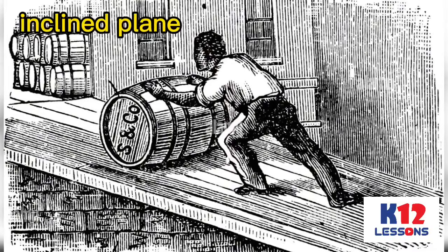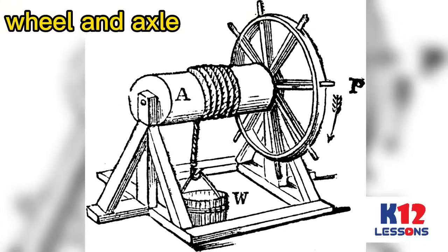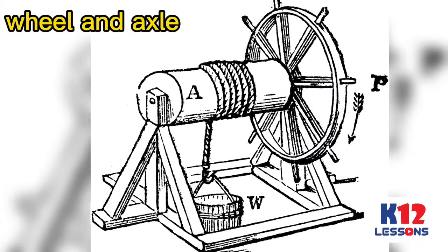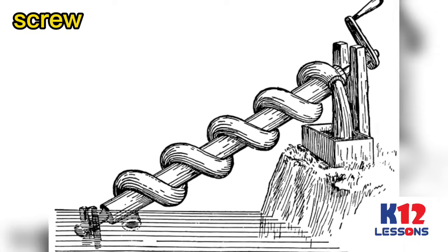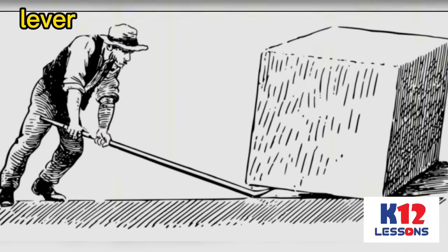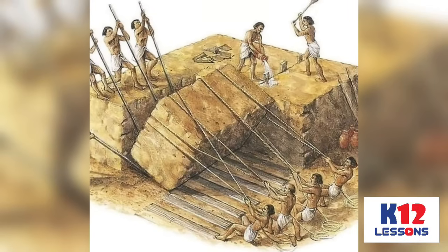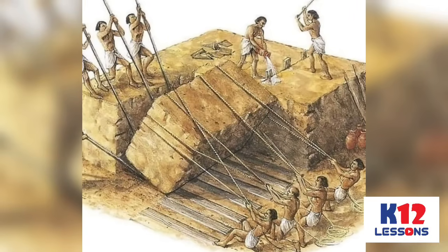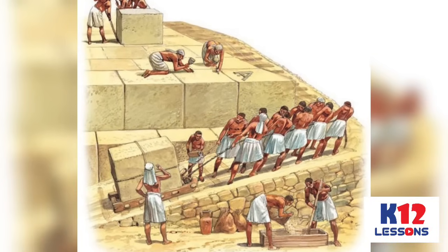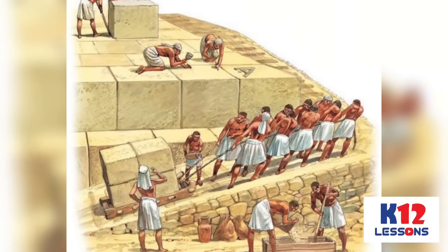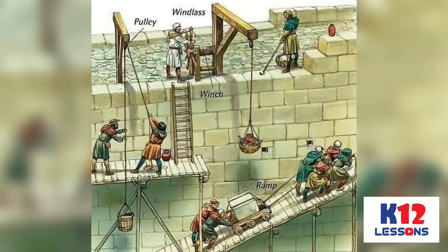Simple machines served as practical solutions to our ancestors' daily struggles before. These were not meant to replace or eliminate work; instead, they were made to make work easier and faster. For example, moving a heavy object a long time ago was a burden to our ancestors, so men thought of ways on how to lessen this difficulty. With the help of machines, tasks are done faster and with ease.